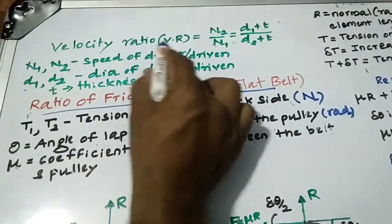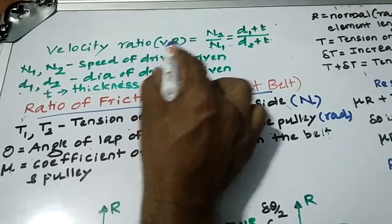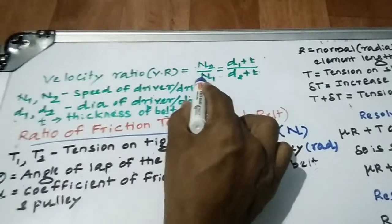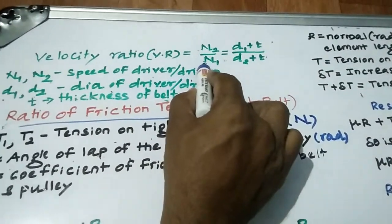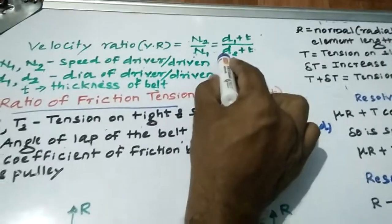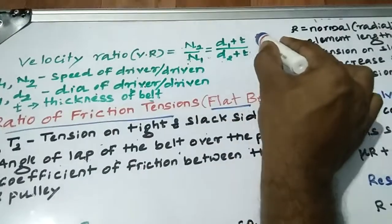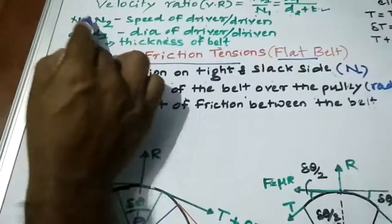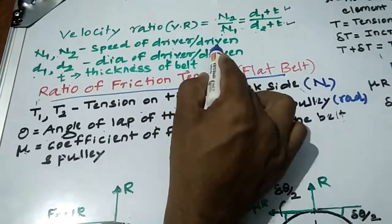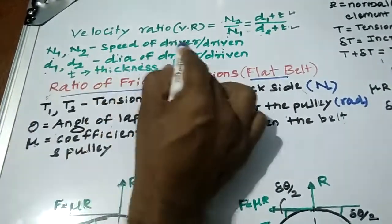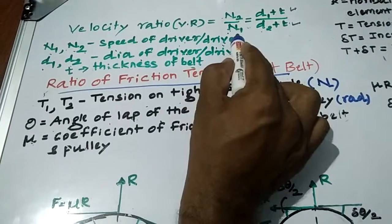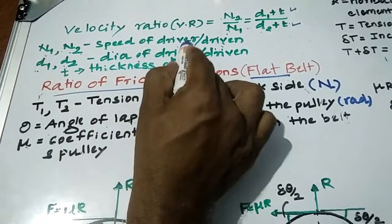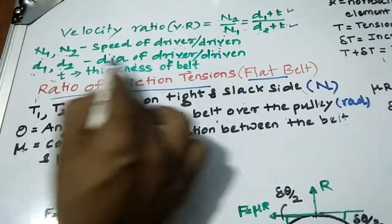You have to remember this. Velocity ratio is equal to Vr, that is the ratio of the speed of the follower to the speed of the driver. It is a reciprocal of D1 divided by D2. If you are considering the thickness, you have to take it as T, that is the thickness of the belt. N1 is the speed of the driver, N2 is the speed of the follower. D1 and D2 are the diameters of the driver and follower. T is the thickness of the belt.